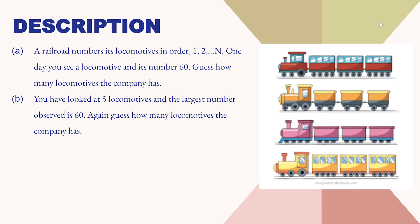So now let's see the solution to the problem. In this question, we have locomotives numbered from 1 till N. And we have seen a locomotive numbered 60. Then we need to find how many locomotives are there. That is, we need to find capital N.